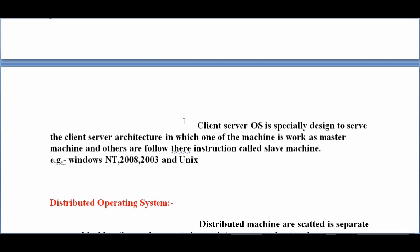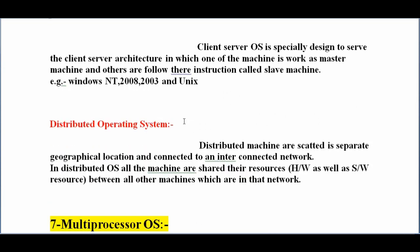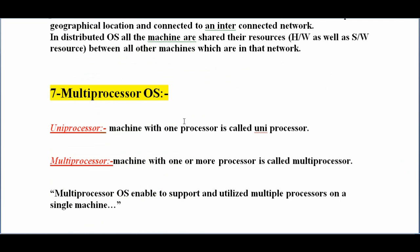Examples include Windows 2008, Windows 2003, and Unix. The other type is distributed operating system. When a network is involved in any communication, it is called distributed. Distributed machines are scattered in separate geographical locations and connected to an interconnected network. In a distributed operating system, all machines share their resources — like hardware and software — with all other machines in that network.